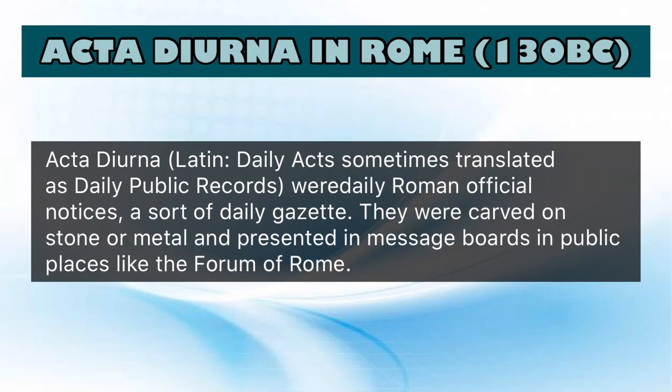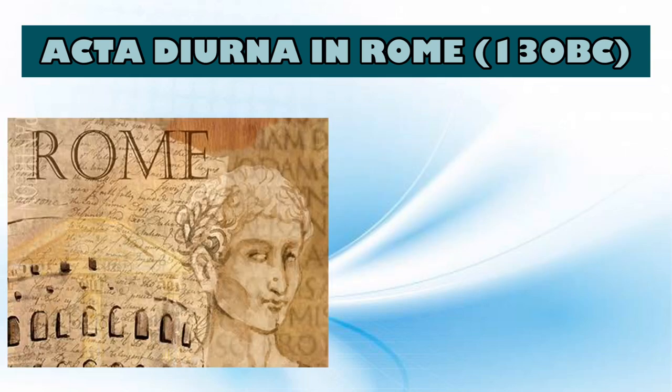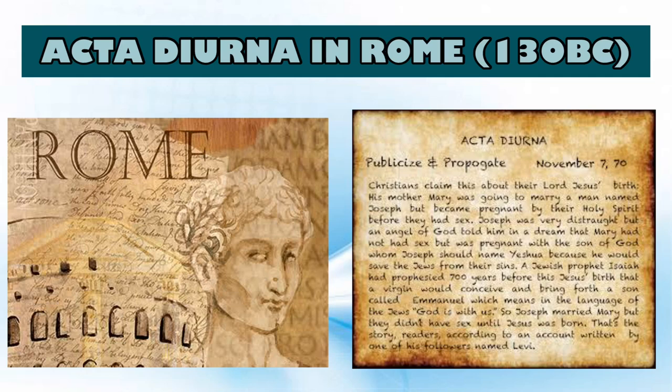Next, we have the Acta Diurna in Rome. It is a Latin word sometimes translated as 'daily public records.' These were daily Roman official notices in the sort of a daily gazette. They are carved on stone or metal and presented on message boards in public places like the Forum of Rome. The first form of Acta appeared around 131 BC during the Roman Republic.